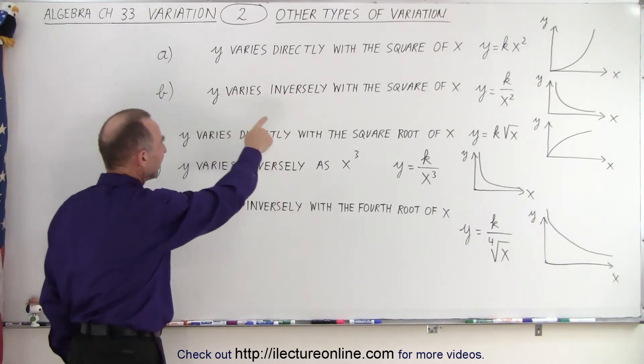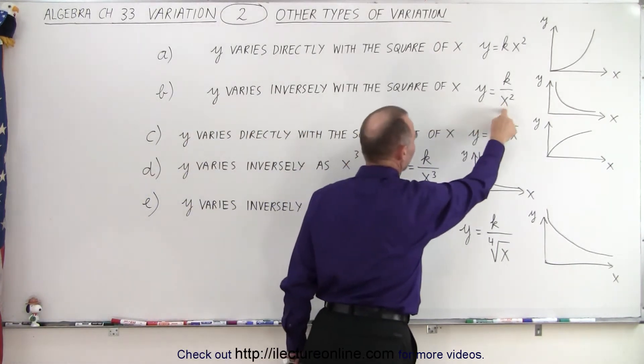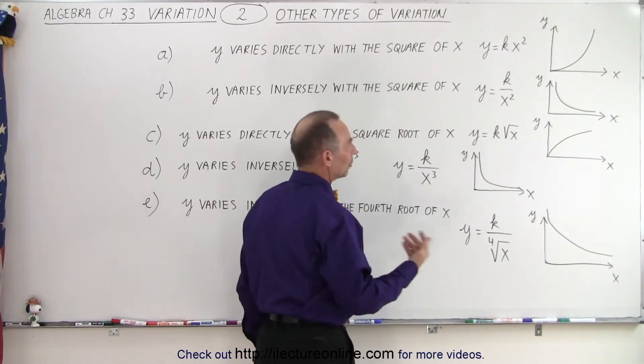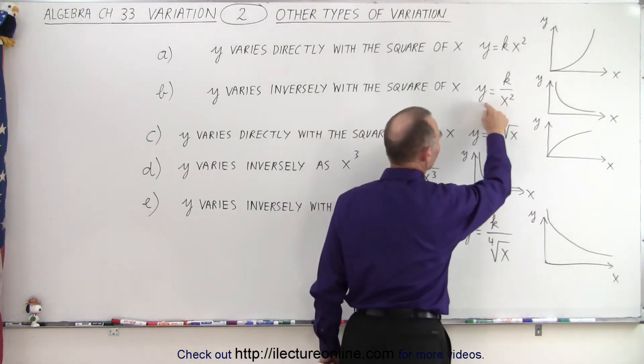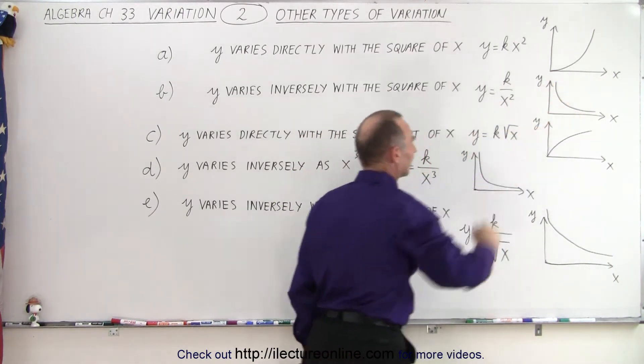Y varies inversely with the square of X. So now X squared is in the denominator. And notice that as X gets bigger, Y gets smaller. So now you have a graph that looks like this.